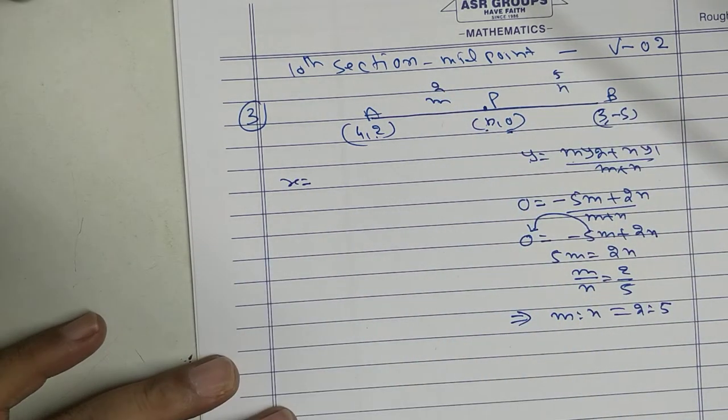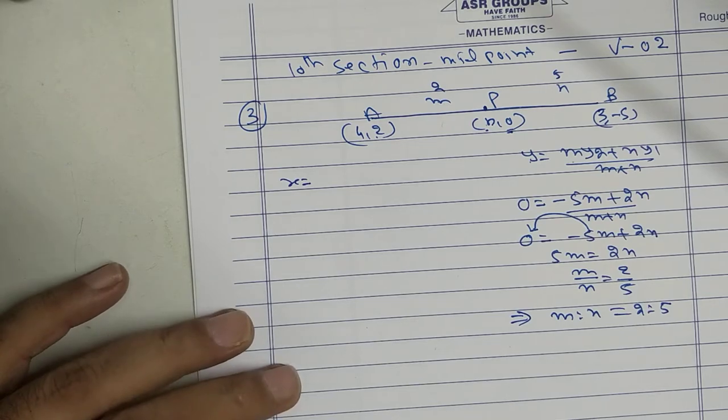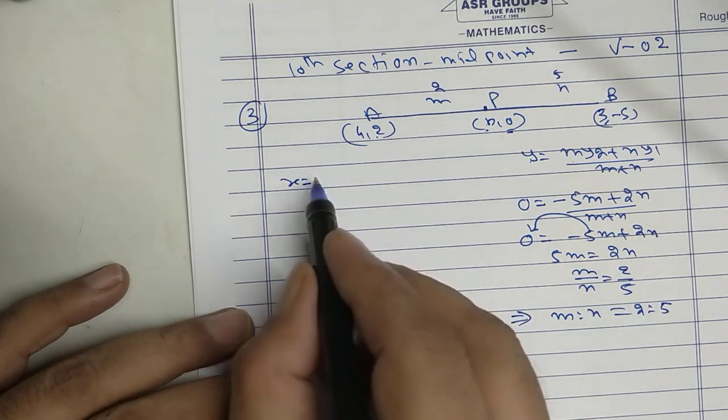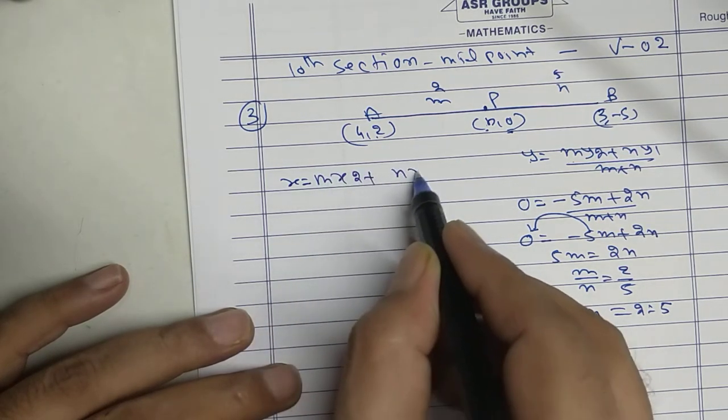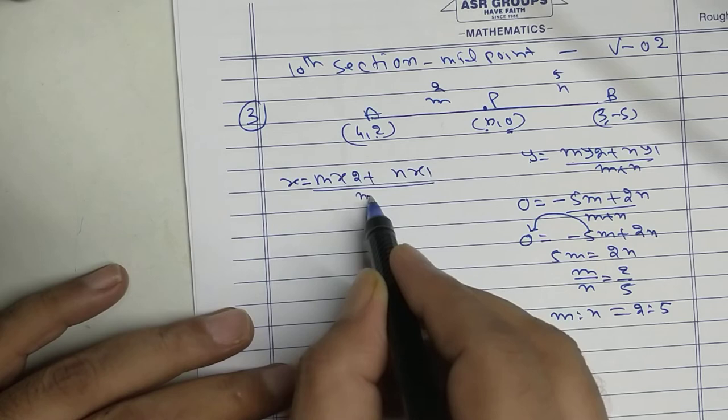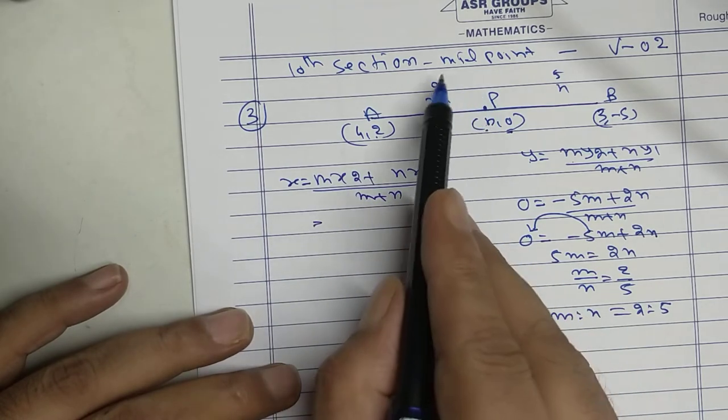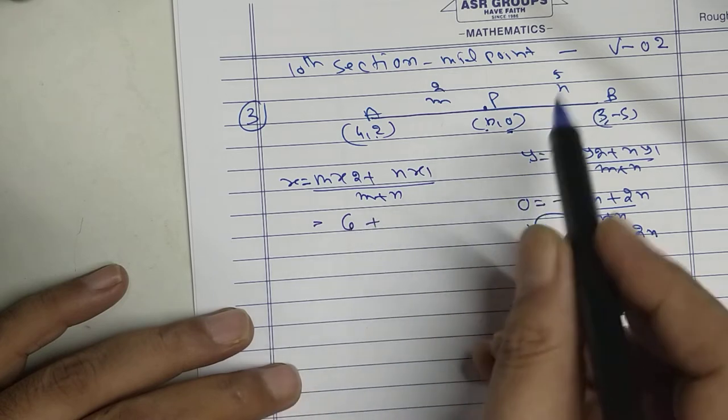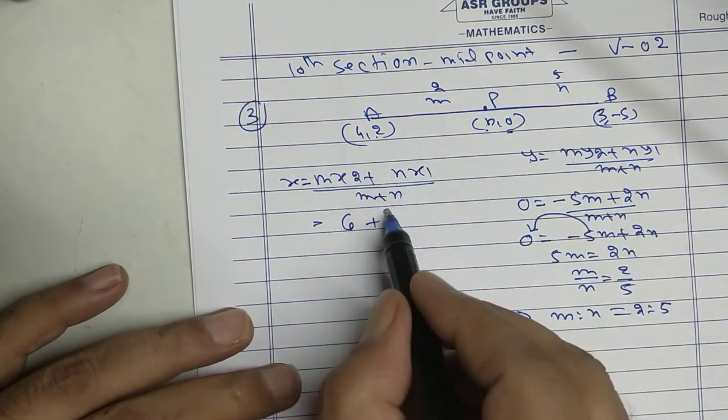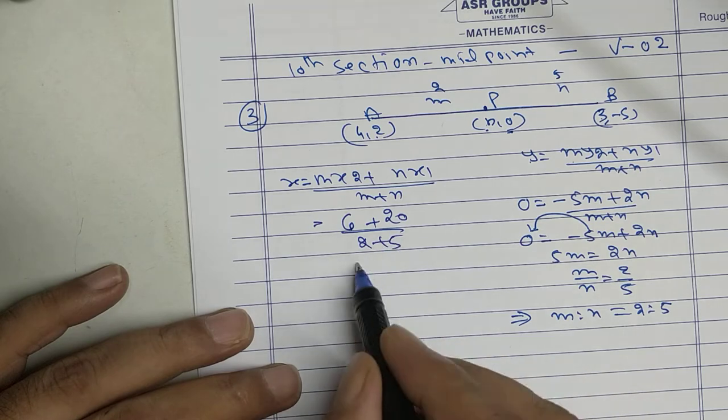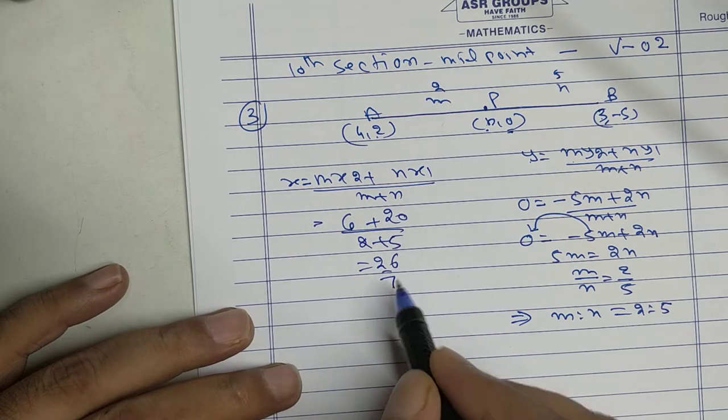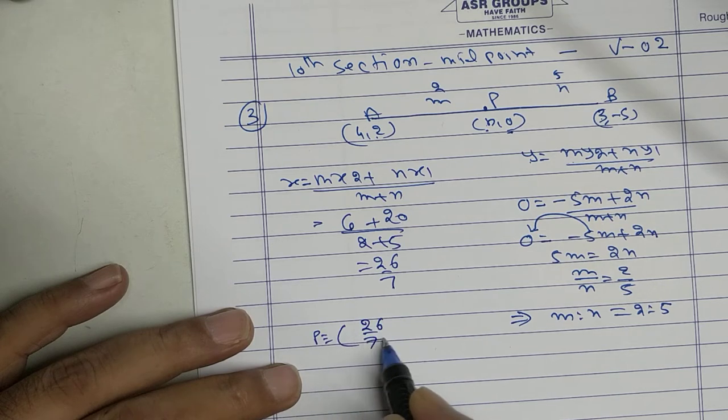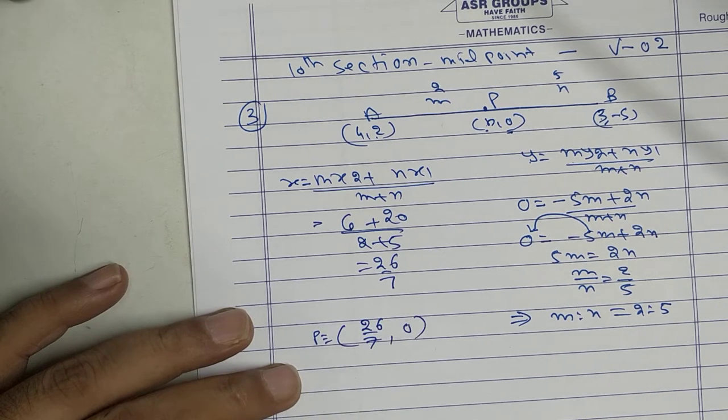Now I can find the value of x. Always write the formula. You will never make any mistake. x equal to m x2 plus n x1 upon m plus n. 2 into 3, 6. 5 into 4, 20. 2 plus 5. 26 upon 7. So coordinates of P: 26 upon 7 and 0.